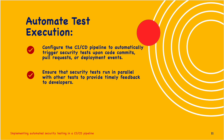Next is automate test execution. Configure the CI/CD pipeline to automatically trigger security tests upon code commits, pull requests and deployment events. Ensure that security tests run in parallel with other tests to provide timely feedback to developers.